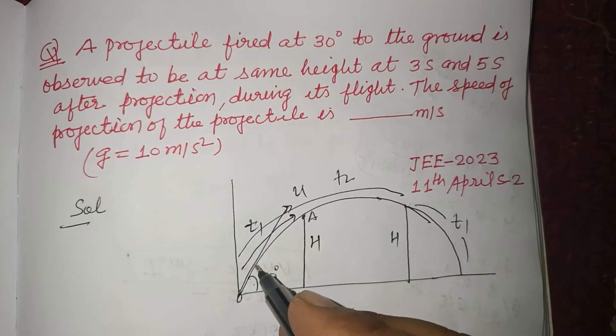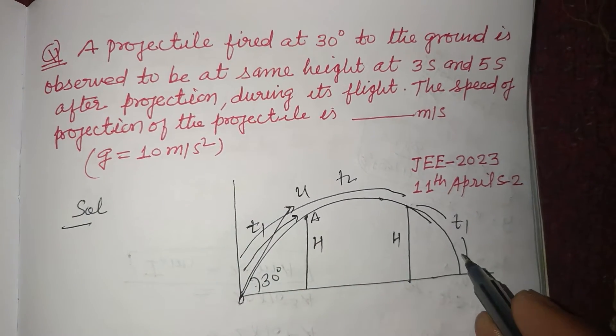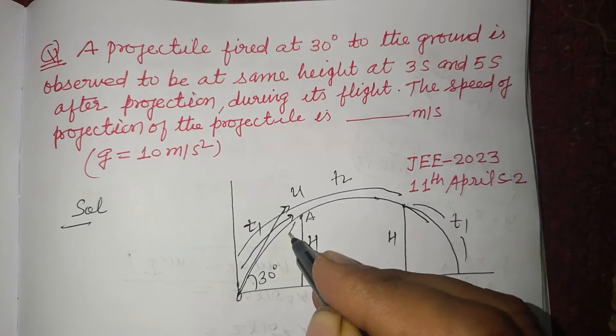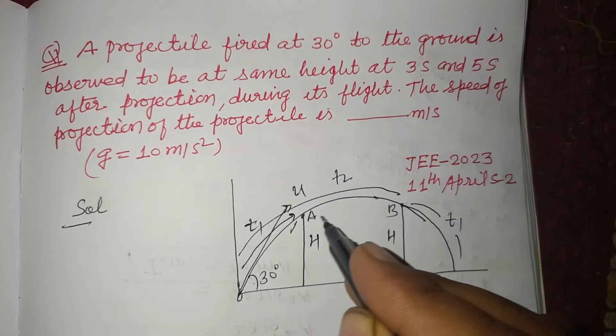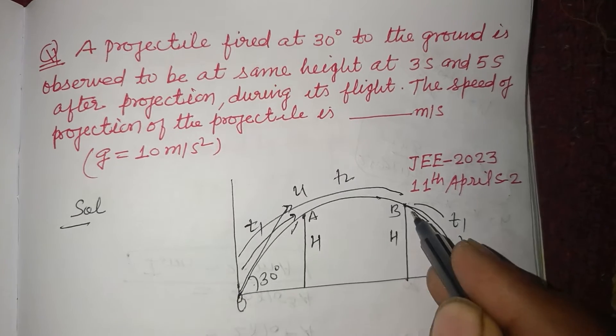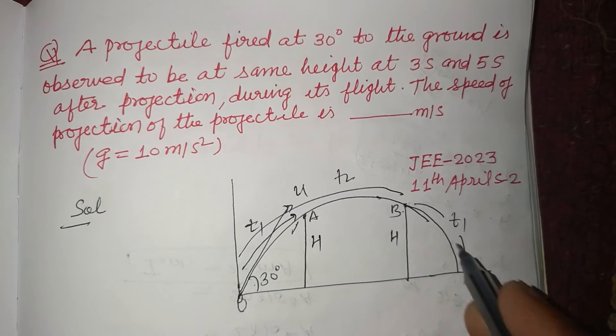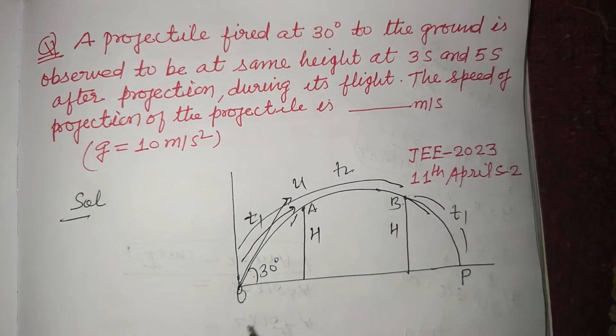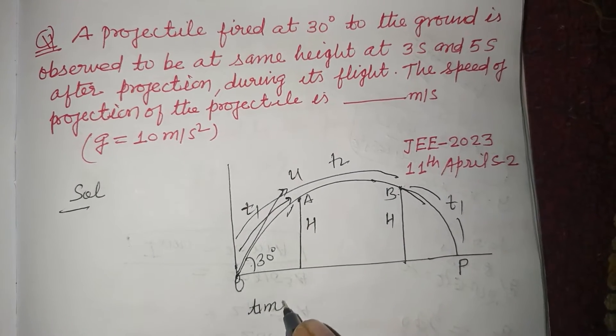So t2 plus t1. From here to this point, let's call it A, and this point is B. O to B is t2 and B to P is t1. So time of flight equals t1 plus t2.